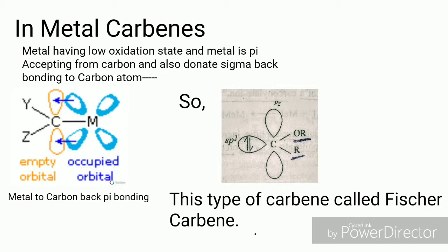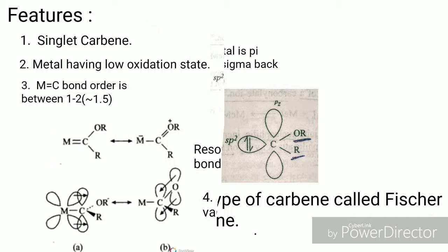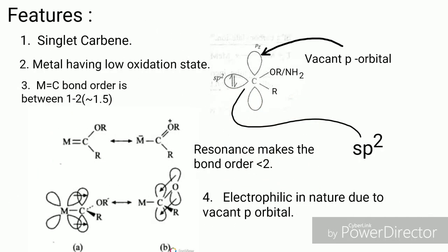In metal carbenes, the metal having low oxidation state, and the metals are pi accepting and also donate pi backbonding with carbon atom. This carbene is called Fischer carbene.